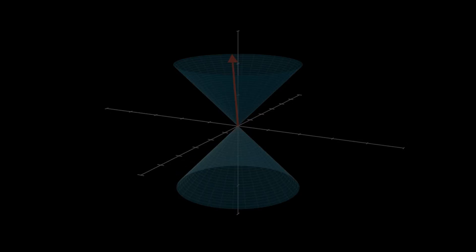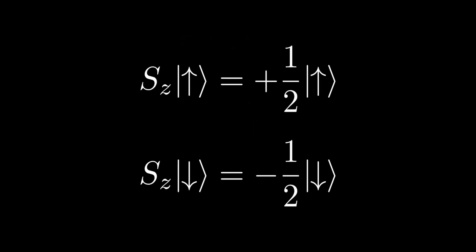An electron can be in one of two spin states: spin up or spin down. They satisfy the following equations for the spin operator in the z direction, sz.